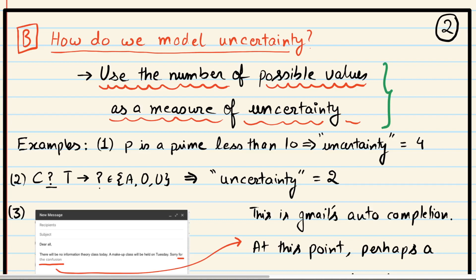Let's take a few examples. Suppose I tell you that I have a prime P in my mind and the prime is less than 10. You know that if it is less than 10, there are just four possibilities: 2, 3, 5, or 7. So there are four possible values, and therefore the uncertainty of this unknown P is just four.